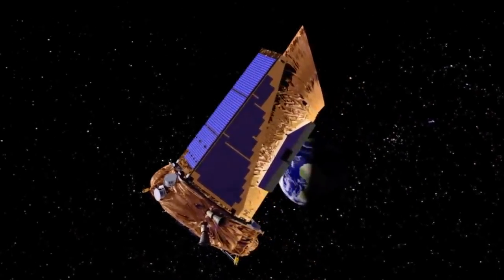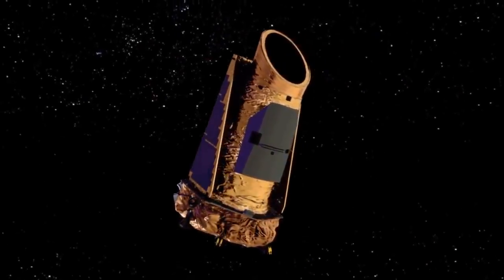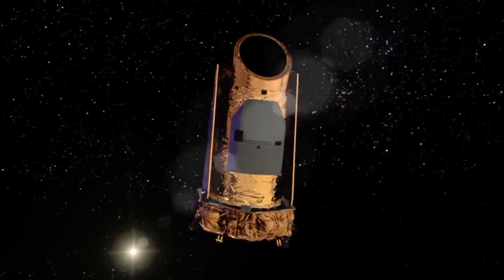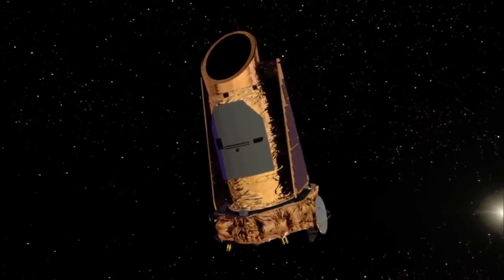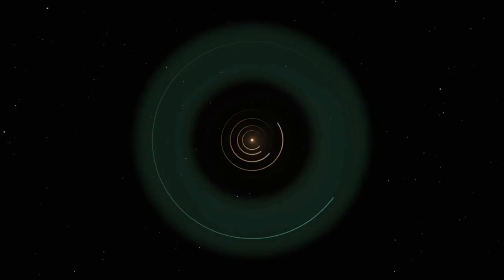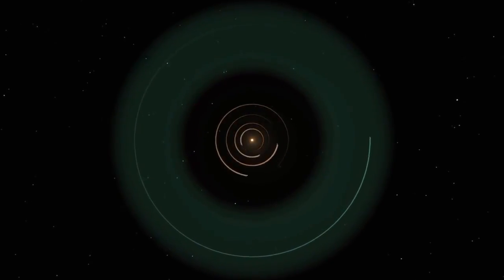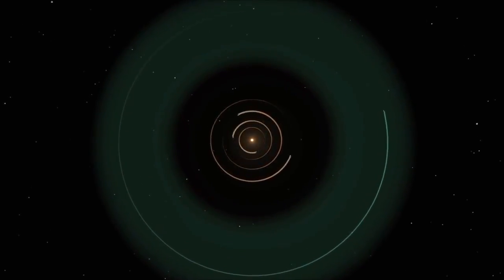This is the Kepler spacecraft. It's used in a NASA mission called the Kepler mission. Its goal is to survey a region of the Milky Way galaxy to discover hundreds of Earth-sized and smaller planets in or near the habitable zone. The habitable zone is the orbital region around the star in which an Earth-like planet can possess water on its surface and possibly support life.